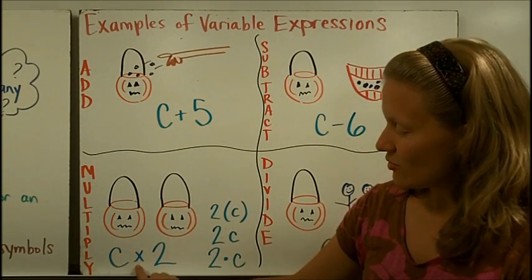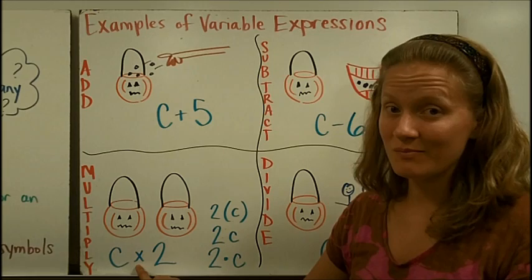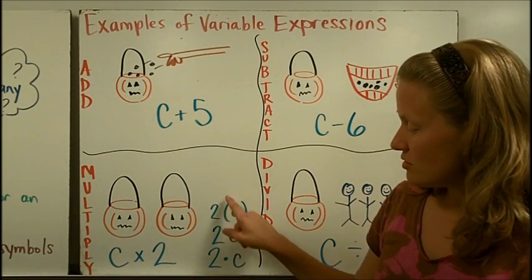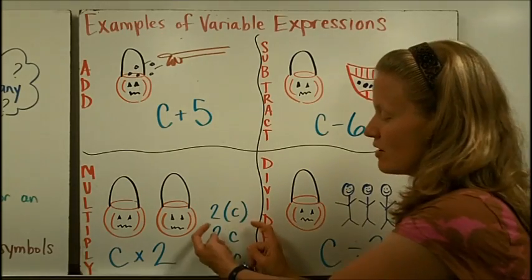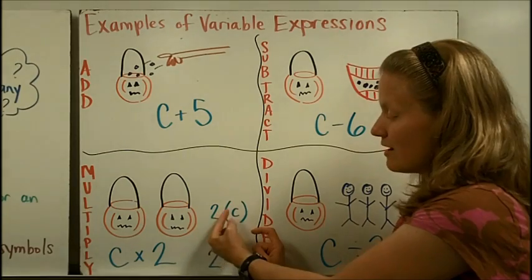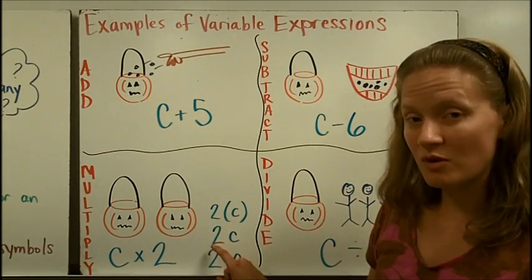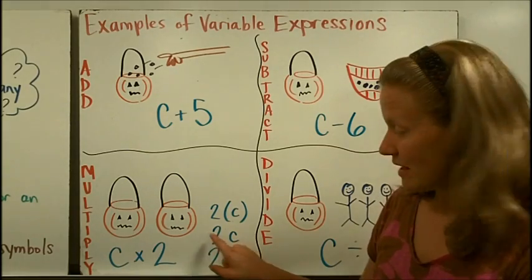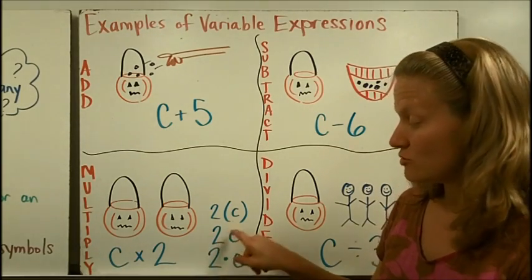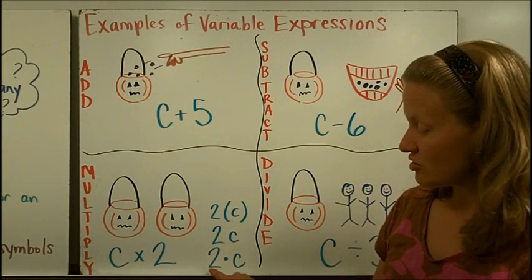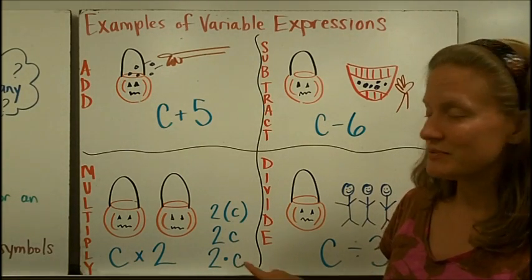It's important to note that the multiplication operation can be shown in several different ways, especially when we talk about variables. You can use parentheses around a variable and squish it right up to a number, and that represents two times C. Sometimes you also see digits right in front of a variable, and that means two times C, or this raised dot can also mean two times C.